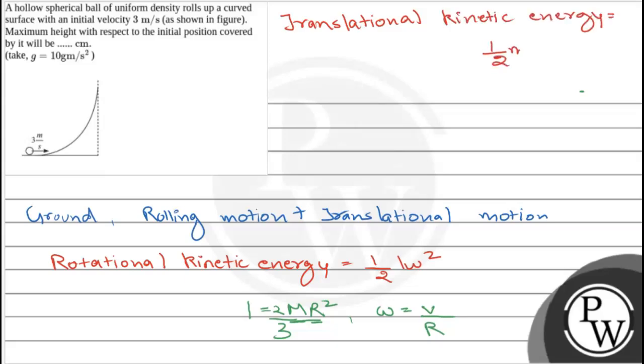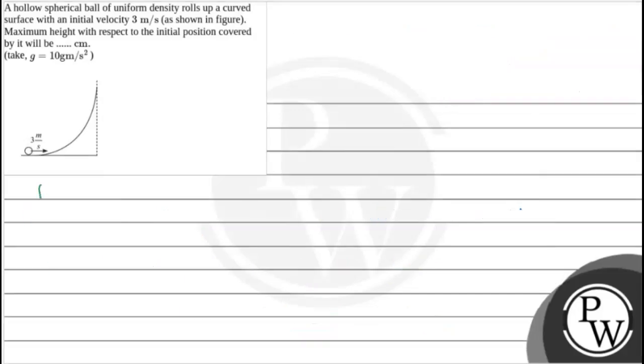Here V is the initial velocity which is given as 3 meter per second. So at ground, total energy TE equals half times 2/3 mr squared times omega squared, which is V squared by R squared, plus translational kinetic energy which is half mV squared. We calculate it and it comes out to be 5/6 mV squared.